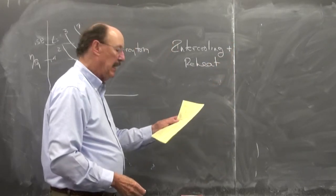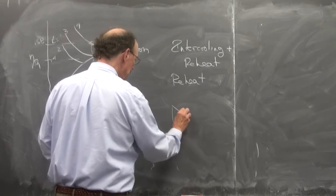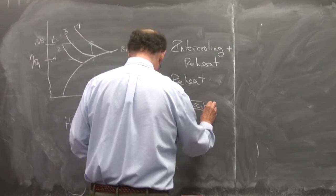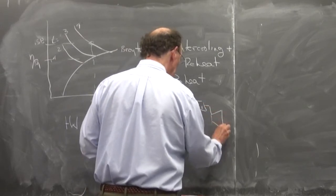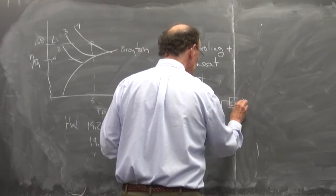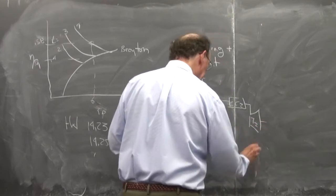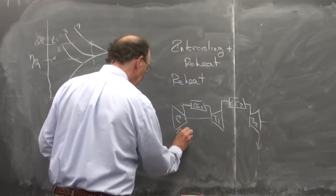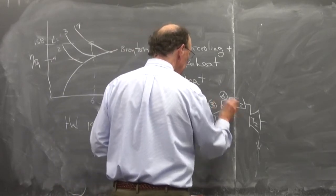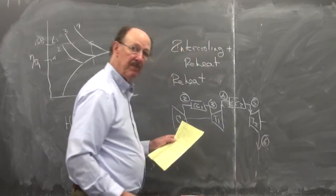So we could have intercooling reheat. And so, let's do the reheat. And here's where we have two combustion chambers. And so I could have a compressor. It goes into combustion chamber CC1, into turbine T1, comes out, goes into combustion chamber 2, CC2, into turbine T2, and then out. So I'd have one, two, three, four, five, six.